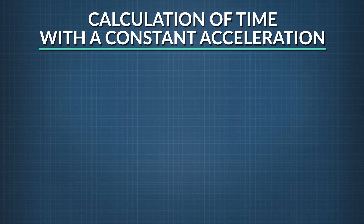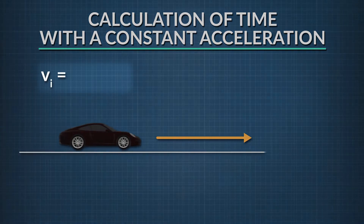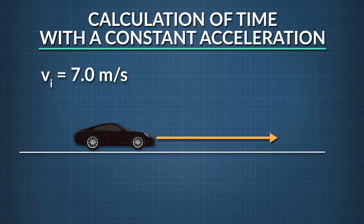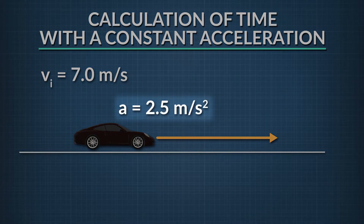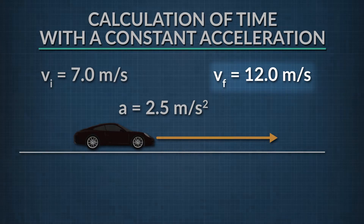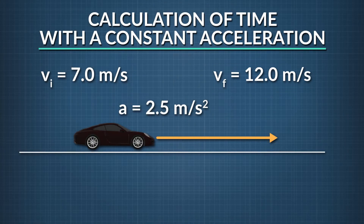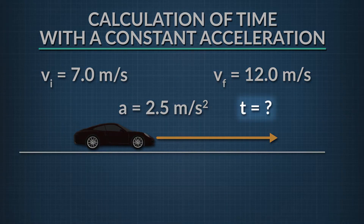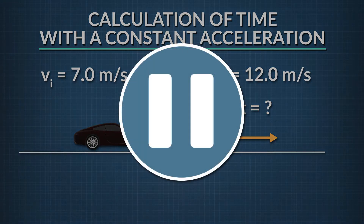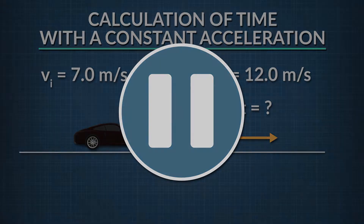Now here's one for you to try. A car is traveling at 7.0 meters per second and accelerates at a constant rate of 2.5 meters per second squared to reach a velocity of 12.0 meters per second. How long does it take for the car to reach its final velocity? Go ahead, press pause, give it a try, and when you think you have the answer, come back and check your work.